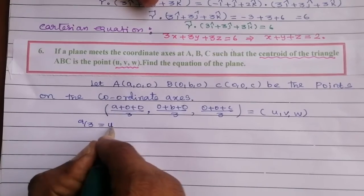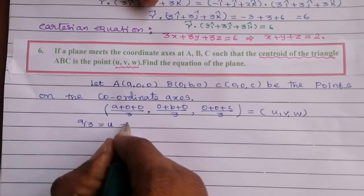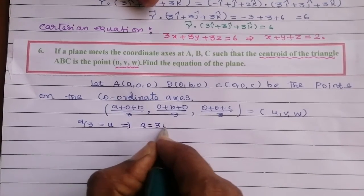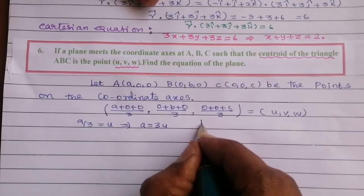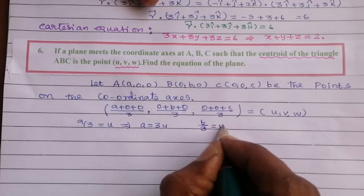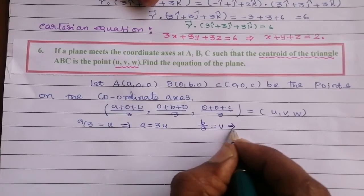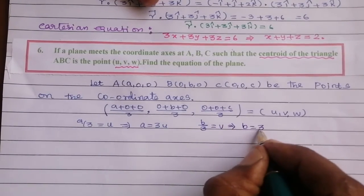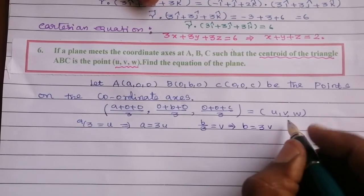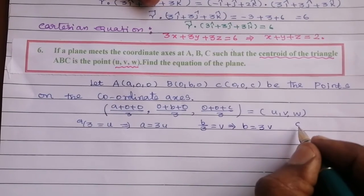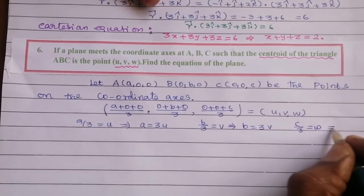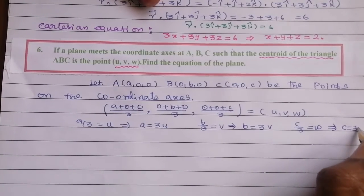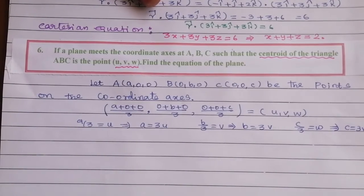From the centroid: a/3 = u, which implies a = 3u. b/3 = v, which implies b = 3v. c/3 = w, which implies c = 3w.